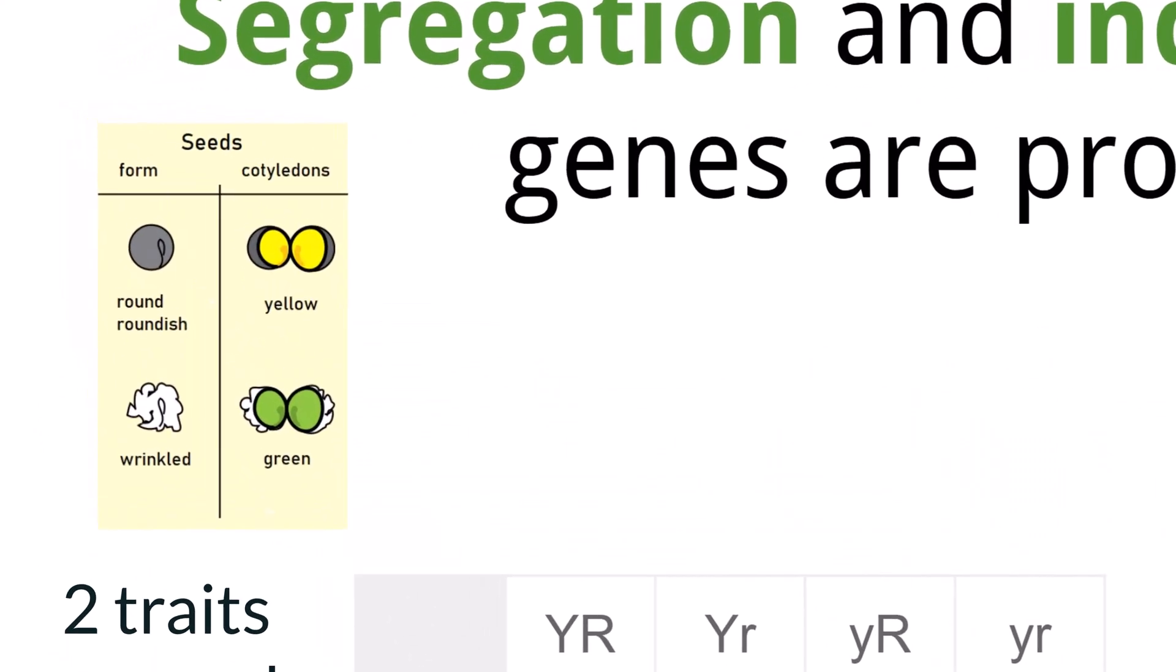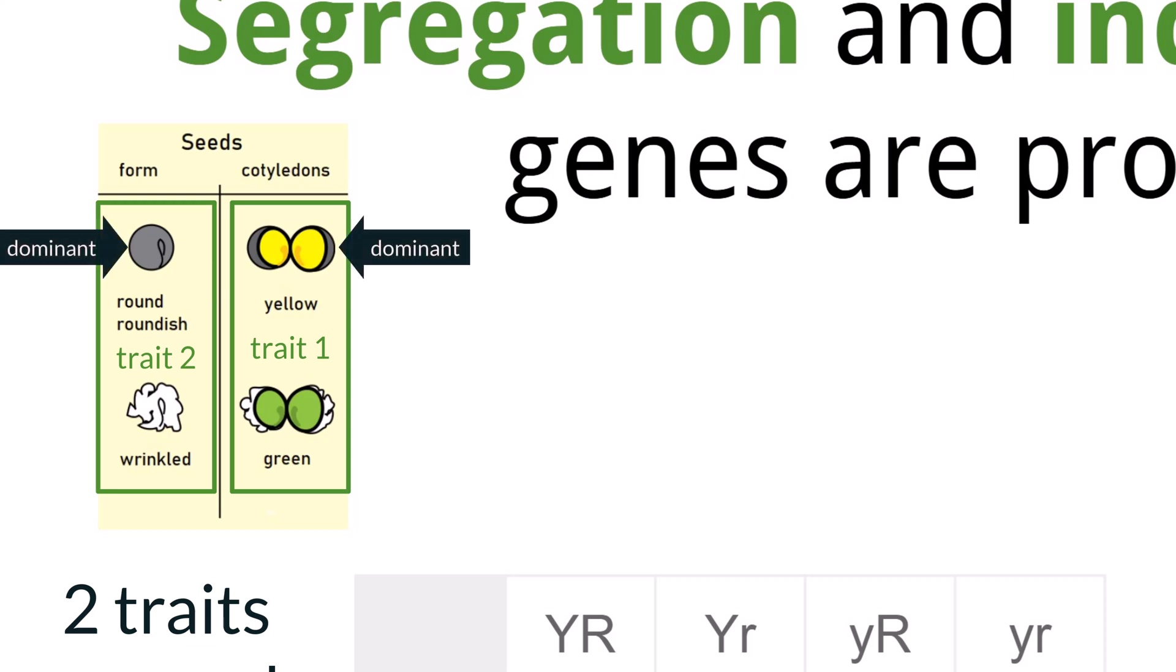Going back to Mendel, let's look at two traits he examined. The pea seeds could be yellow or green, while also being round or wrinkled. The allele for round is dominant, and the allele for yellow is dominant. We will use uppercase R to represent dominant and lowercase r to represent wrinkled, uppercase Y to represent yellow, and lowercase y to represent green.